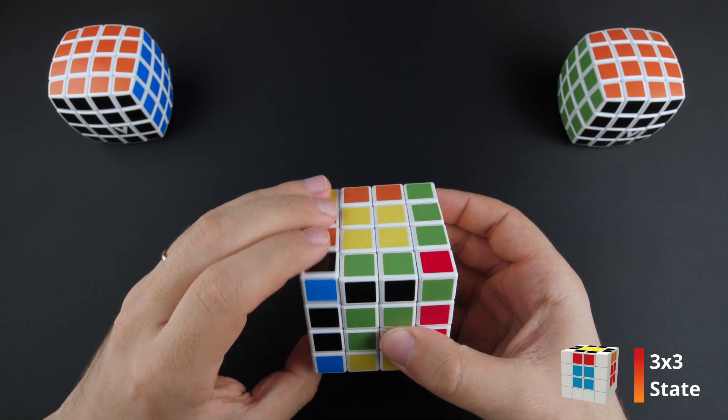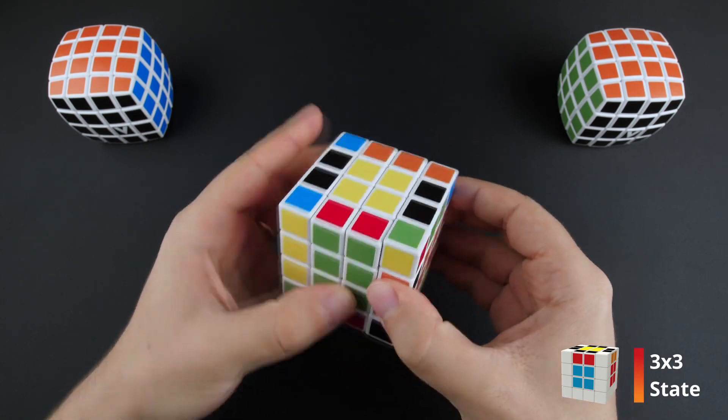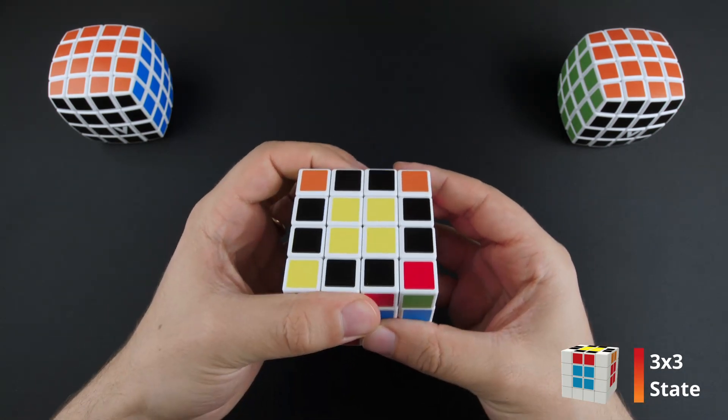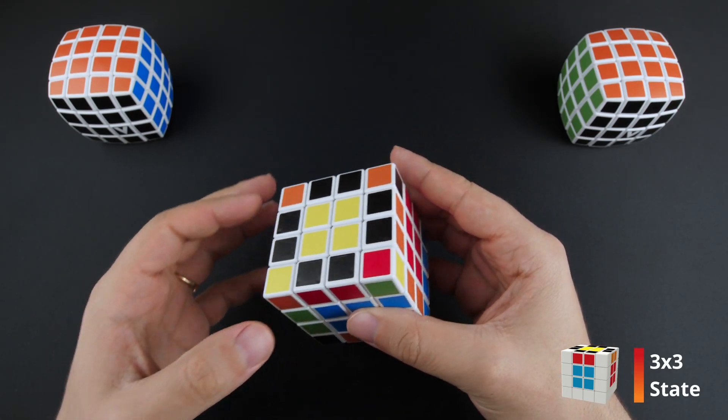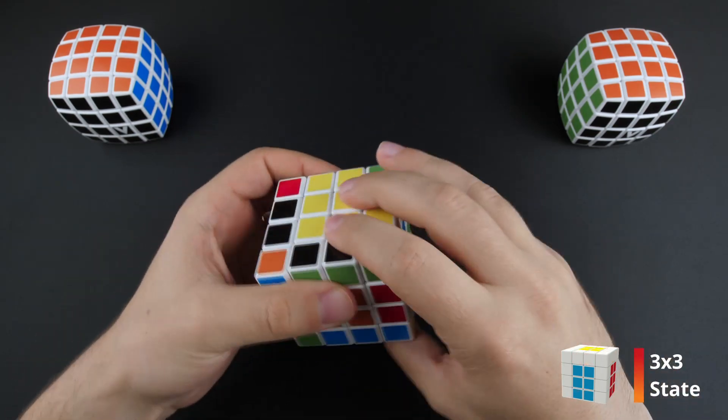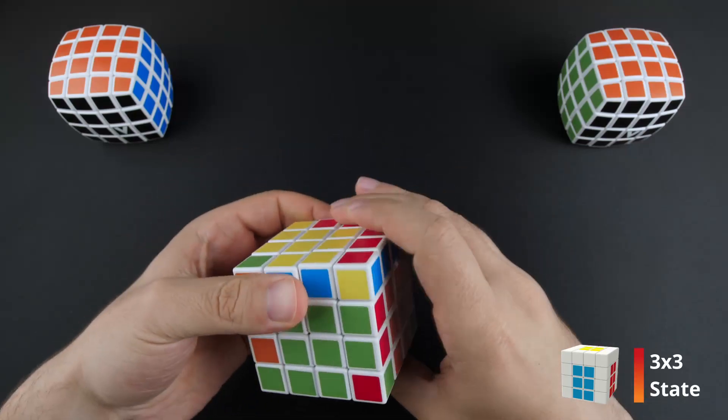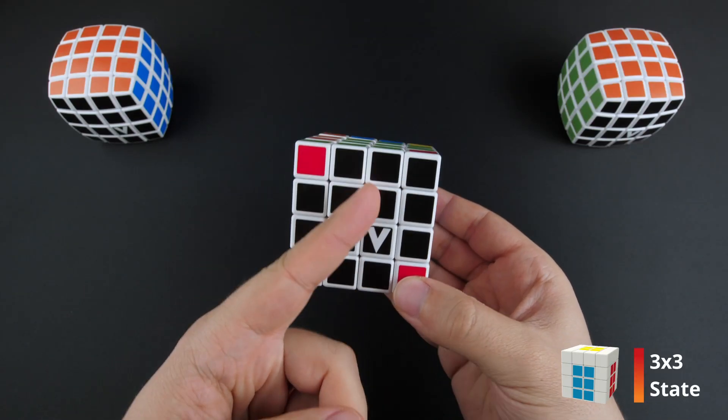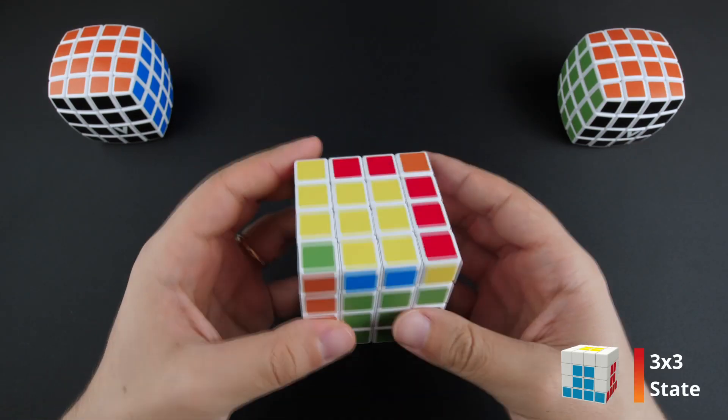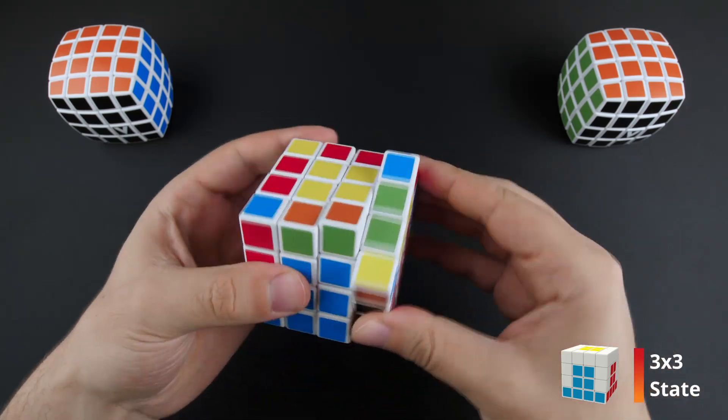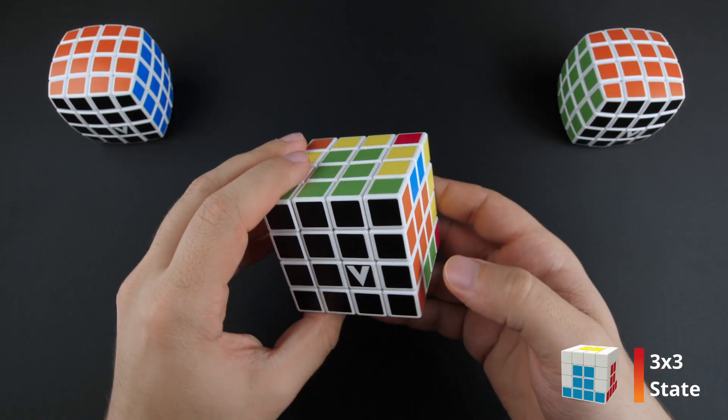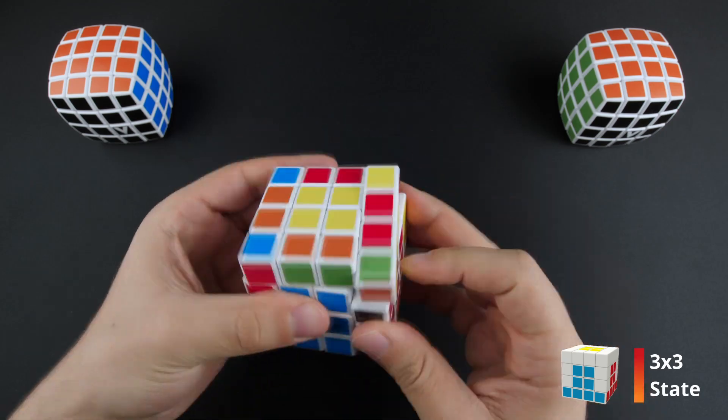The 3x3 state. Let's go for it. We solve the black daisy just like a 3x3. Then we can make the cross. Afterwards, we can solve the black corners as usual. The final step is to finish the second layer.